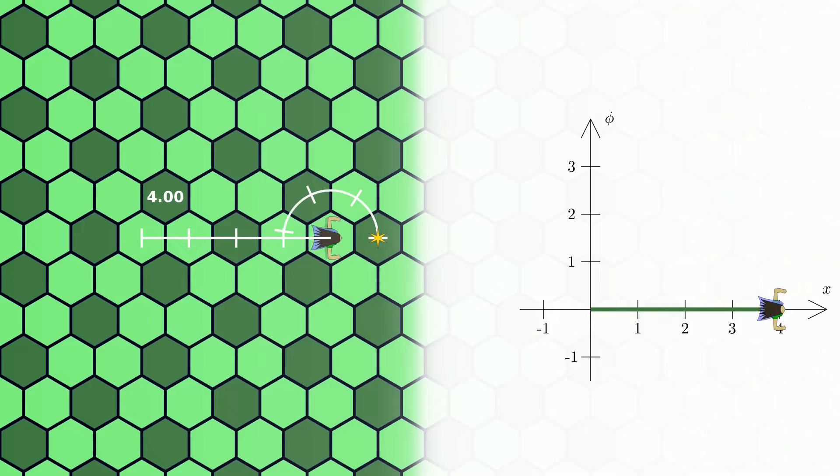However, we also have this phi dimension related to the rotation angle and we need to measure the distances in this dimension. We will be measuring the angles in radians.